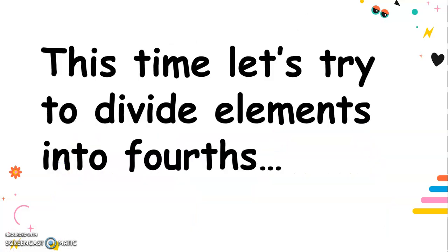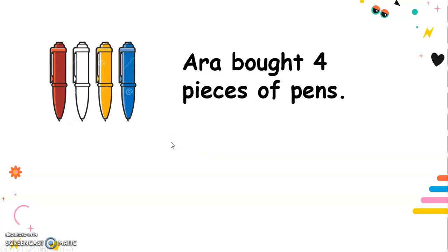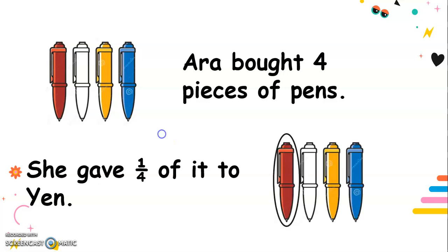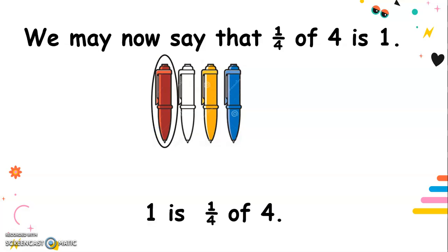This time, let's try to divide elements into fourths. Ara bought four pieces of pens. She gave one-fourth of it to her friend Yen. How many pens did she give to her? Ara bought four pieces of pens and gave one-fourth of it to Yen. That's one-fourth of four. We may now say that one-fourth of four is one. One is one-fourth of four.